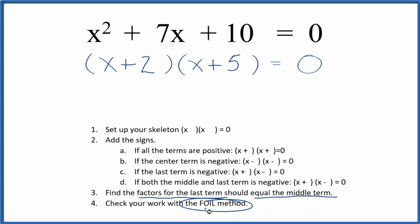We should check our work though with the FOIL method. We're going to multiply the first terms, the outside terms, inside, and last.